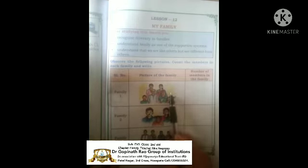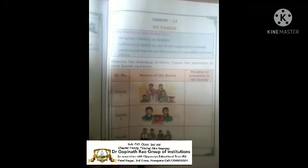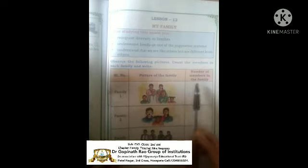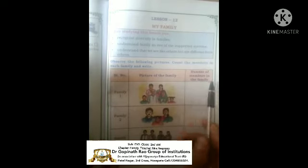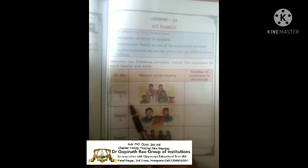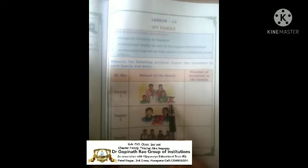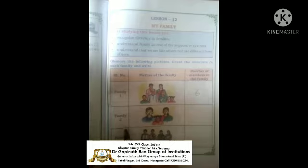Children, see the first picture, second picture and third picture. There is family number one, family number two, and family number three. Count the members and write here the number of members in each family. In the first picture, how many members are there? Father, mother, grandfather, grandmother, brother and sister — there are six members.